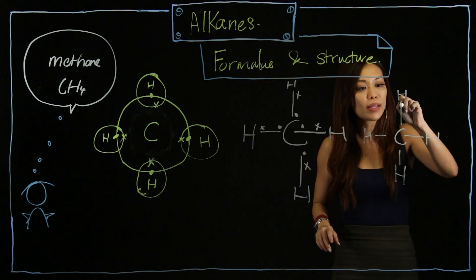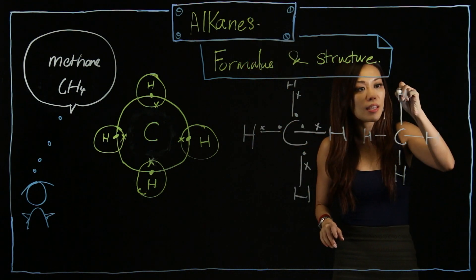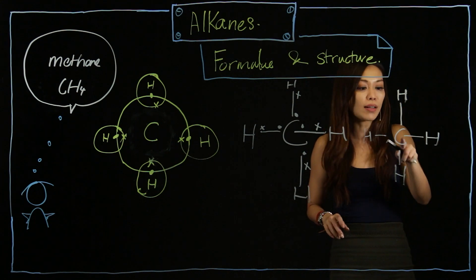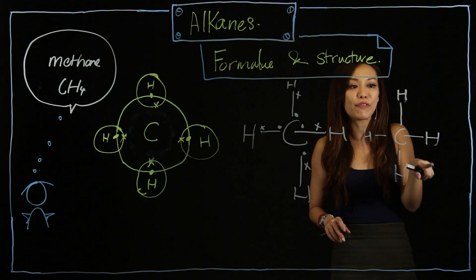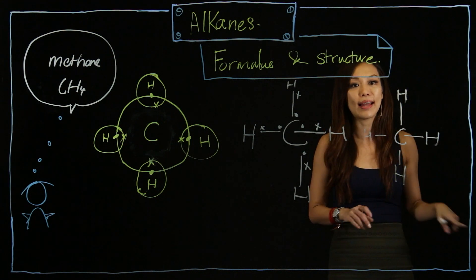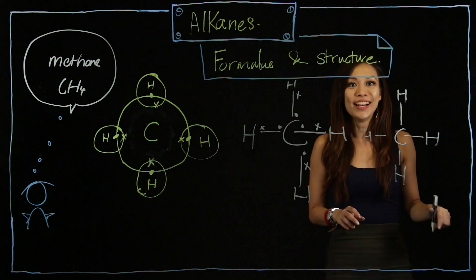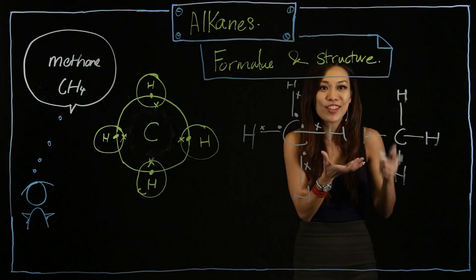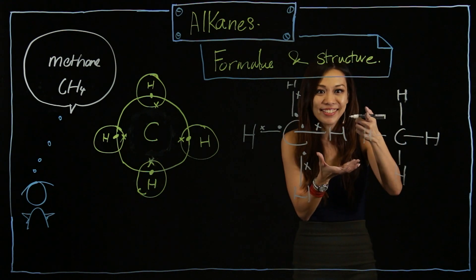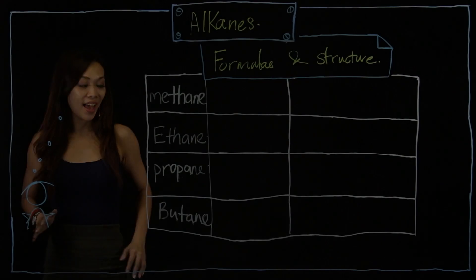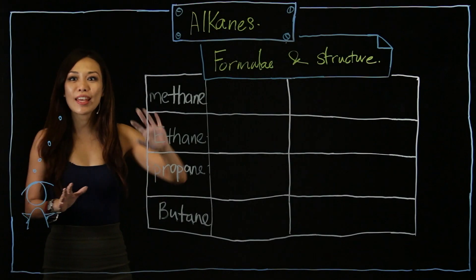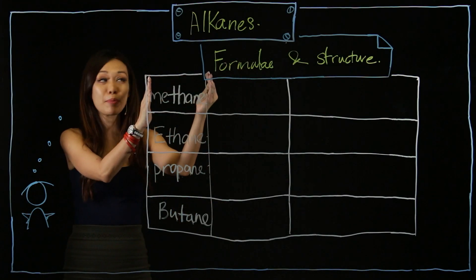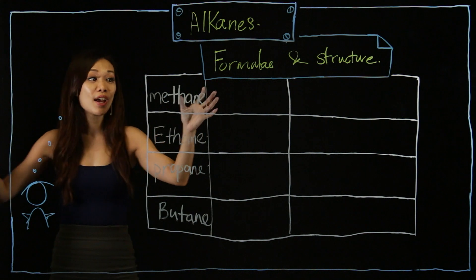Some people, when they look at this in the exam, wonder — how come there are hyphens, all these lines? No, each line means a shared pair of electrons. Do you get that? As you can see here, I already have the alkanes family set up.